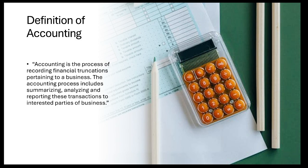Now come to accounting. Accounting is the process of recording financial transactions pertaining to a business. The accounting process includes summarizing, analyzing, and reporting these transactions to interested parties of the business. Accounting ke andar hum sare financial transactions ko record karte hain — woh sare financial transactions jo business se related hain. Unko hum record karte hain, classify karte hain, then further usko summarize karte hain, analyze karte hain, then report karte hain apne business ke interested parties ko.